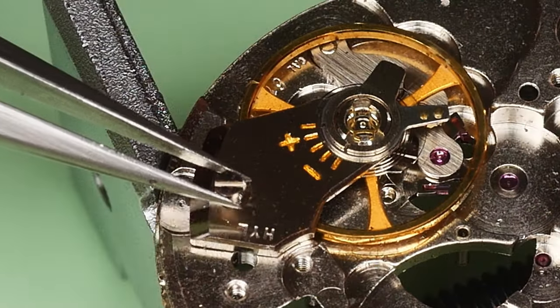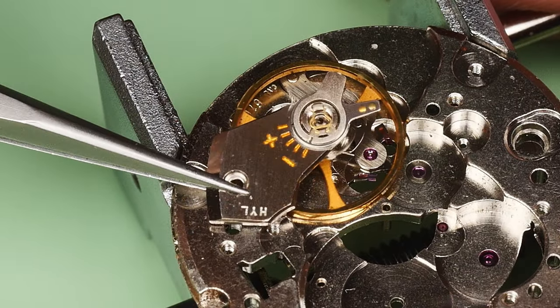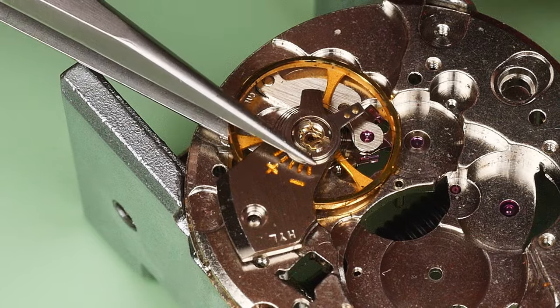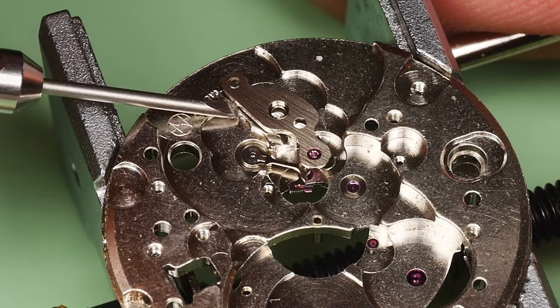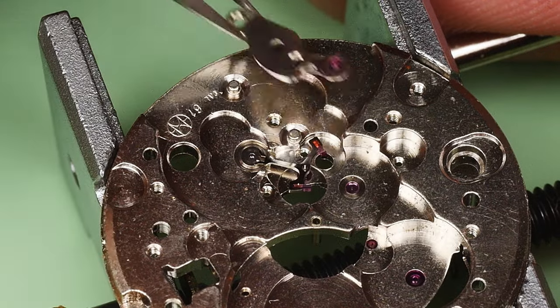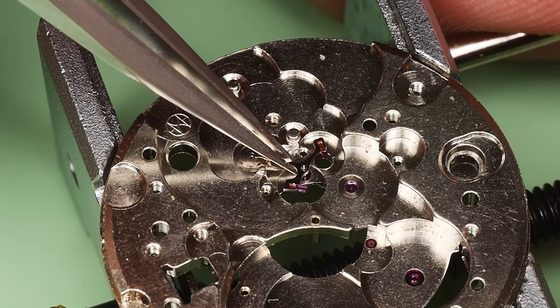I can take off the balance cock and balance wheel. This assembly too will be cleaned in one dip. And now for the pallet cock, followed finally by the pallet fork.